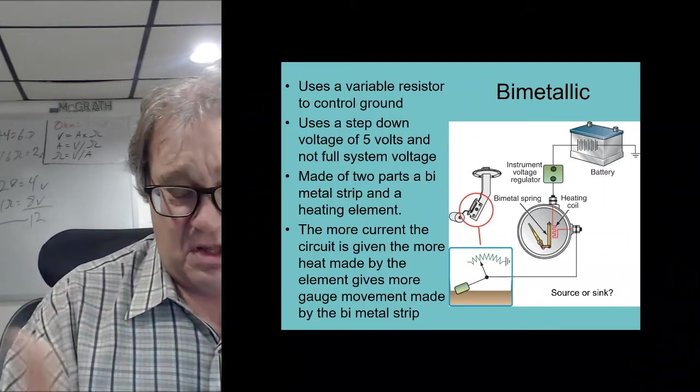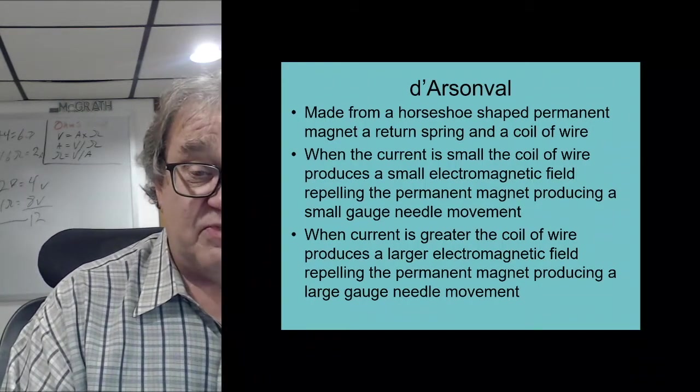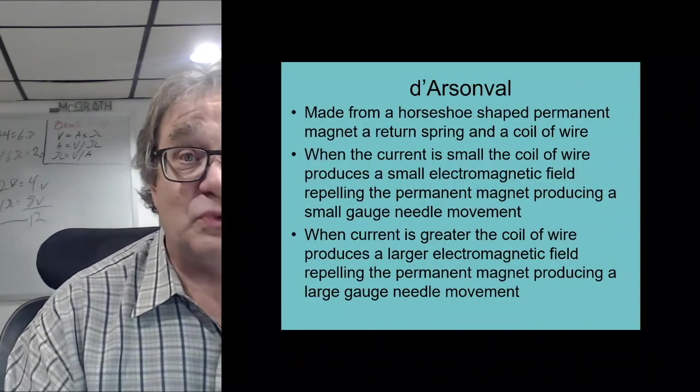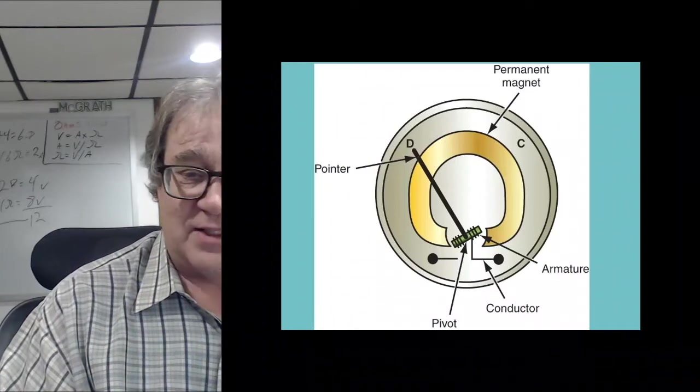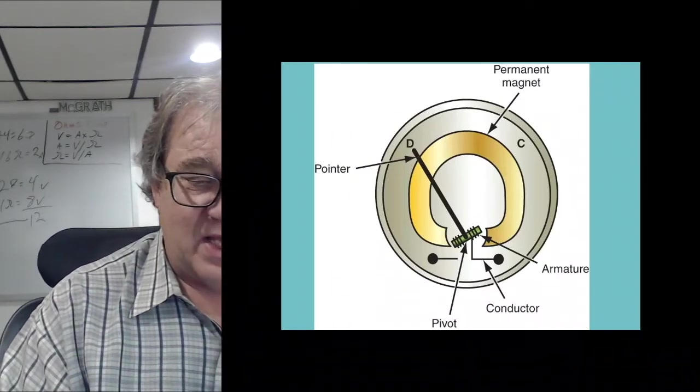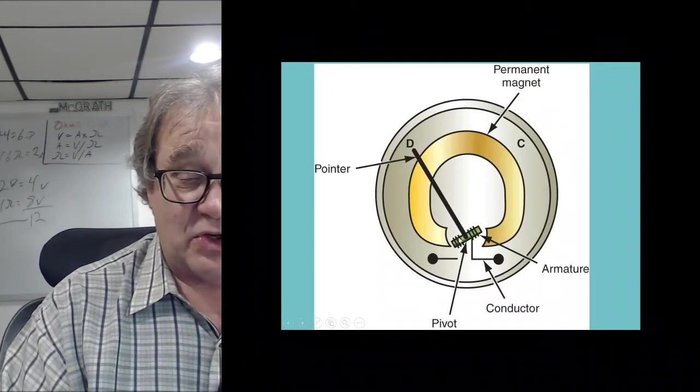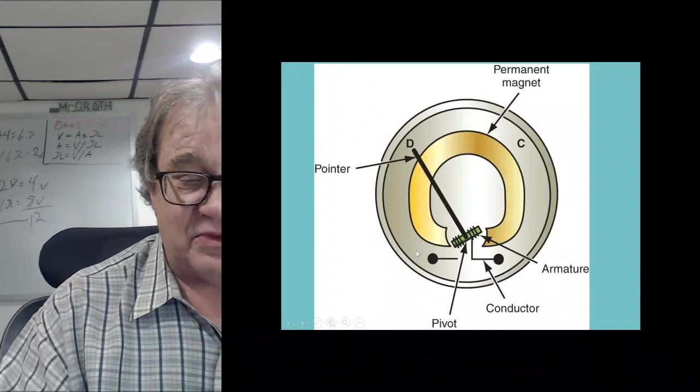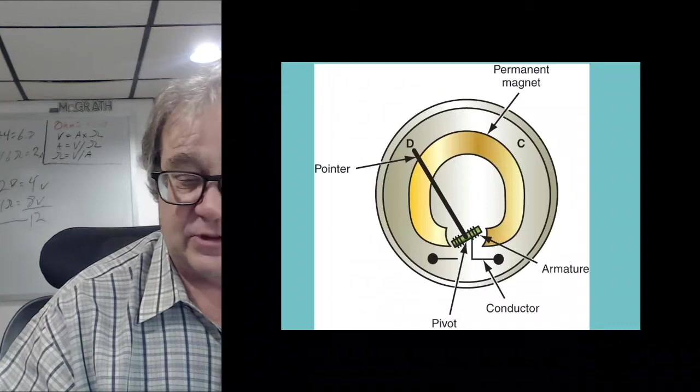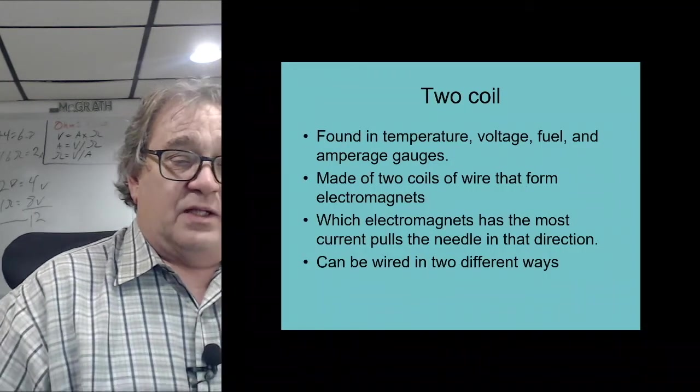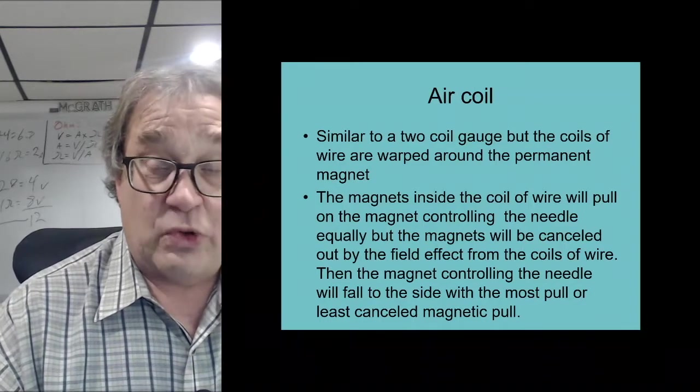D'Arsonval - I can never say this one - if somebody wants to feel free. This one's based on magnets. We have a permanent magnet, a horseshoe magnet, and then we have a conductor, an electromagnet down at the bottom. We apply a current to this and it builds up a magnetic field and that's what moves the gauge from one side to the other. Then we have two coil gauges, air coil gauges.